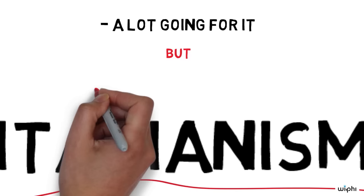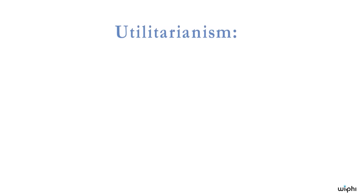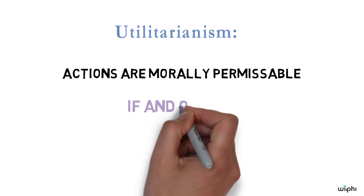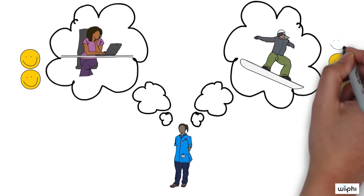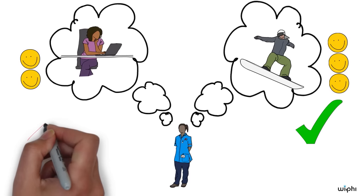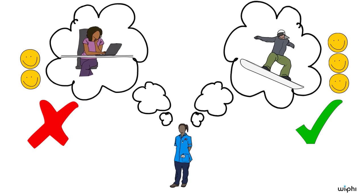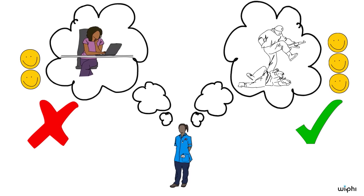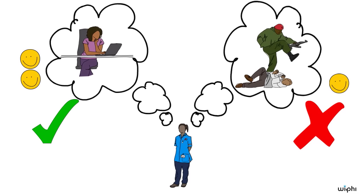Utilitarianism has a lot going for it, but it also raises some very interesting worries, and I'm going to talk a bit about some of those. Utilitarianism is the view that actions are morally permissible if and only if they produce at least as much net happiness as any other available action. In other words, the more happiness and less suffering that results from our actions, the better the action is, and the right action is the one that produces the greatest balance of happiness over suffering. According to utilitarianism, any other action is morally wrong. This utilitarian principle is supposed to be absolute and all-encompassing — it will tell you for any decision whatsoever exactly what you should morally do, and it admits of no exceptions.